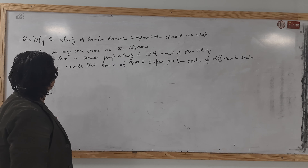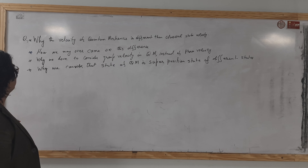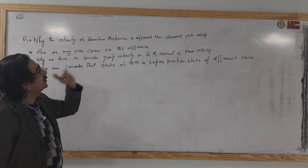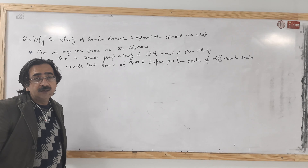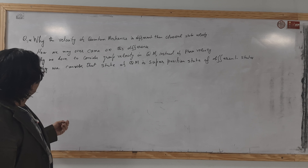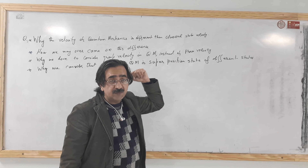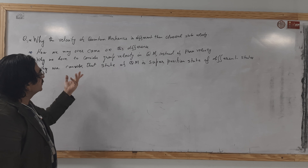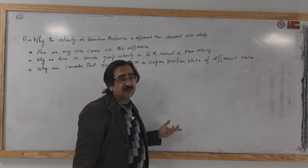As we have already discussed, today we will try to find the answer of these questions. Number one, why the velocity of quantum mechanics is different than classical state velocity. Number two, how we may overcome these differences, why we have to consider the group velocity in quantum mechanics instead of the phase velocity. And the last, why we consider the state of quantum mechanics in superposition state of different states.